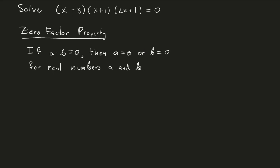The zero factor property states that if you have two numbers a and b which multiply to zero, then either a is zero or b is zero or both. In mathematics, 'or' means one or the other or both — not the English exclusive or. So in this example, by the zero factor property we have three factors multiplying to zero, giving us three potential roots or zeros.